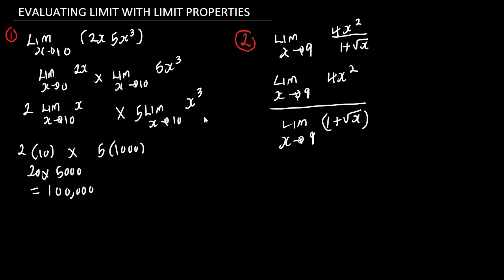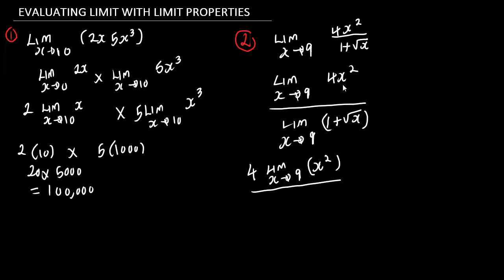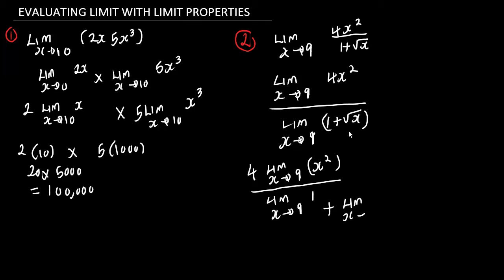Now the next step is to evaluate the limit of the numerator. As you can see, we are having a constant 4, meaning we are going to take this constant outside the limit using the constant multiple rule. This is going to be 4 multiplied by the limit as s approaches 9 of s squared. On the denominator, we are going to use the sum rule. The limit as s approaches 9 of 1 plus the square root of s is going to be split: the limit as s approaches 9 of 1 plus the limit as s approaches 9 of the square root of s.